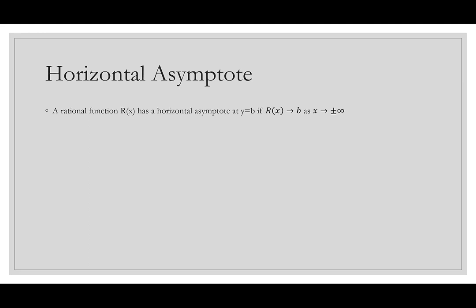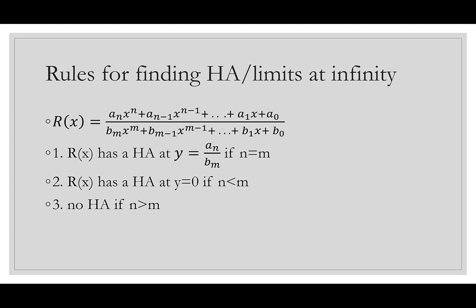For finding horizontal asymptotes of a rational function r(x), there are three rules based on comparing the degree n of the numerator to the degree m of the denominator. Rule 1: if n = m, the horizontal asymptote is y = a_n / b_m (the ratio of leading coefficients). Rule 2: if n < m, the horizontal asymptote is y = 0. Rule 3: if n > m, there is no horizontal asymptote.